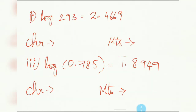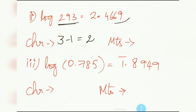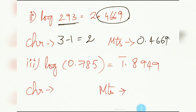For the second sub-question: similarly, log 293 is equal to 2.4669. Again, for the characteristic, how many digits are there? Three minus 1, it is going to be 2. And the mantissa, whatever is there after the decimal point — 0.4669.